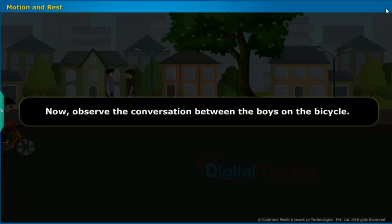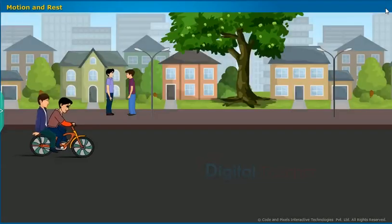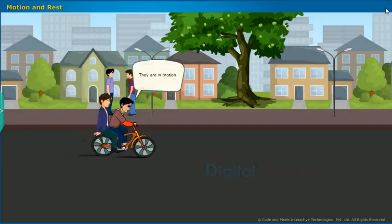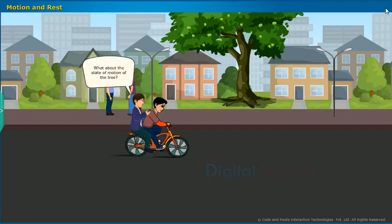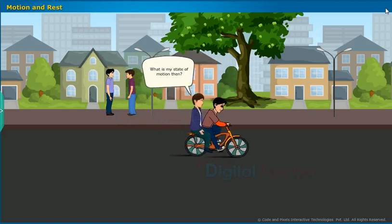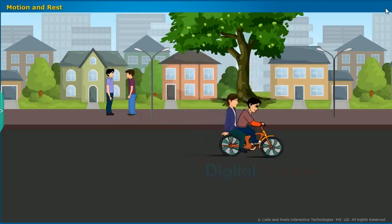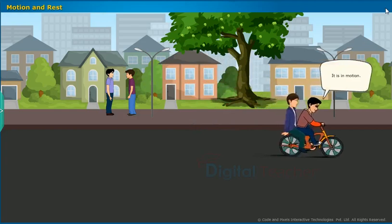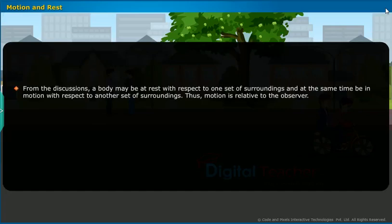Now, observe the conversation between the boys on the bicycle. What is the state of motion of both those boys standing beside the road? They are in motion. What about the state of motion of the tree? It is also in motion. What is my state of motion then? You are at rest. What is the state of motion of the bicycle we are riding? It is in motion. From the discussions, a body may be at rest with respect to one set of surroundings and at the same time be in motion with respect to another set of surroundings. Thus, motion is relative to the observer.